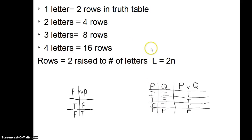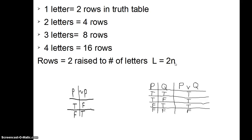If you have three letters — like if we had P or Q and then R in parentheses — you would have eight rows. Your book gives you the formula L equals two raised to the power of N, where N is the number of letters. So one letter gives two rows, two letters gives four rows, three letters gives eight rows, and it keeps doubling.